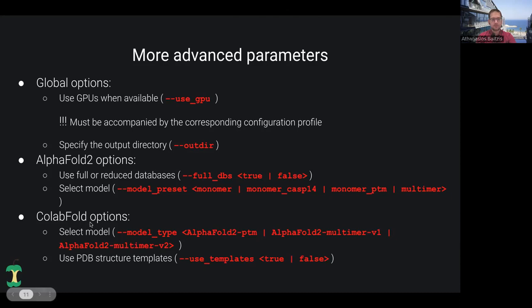Regarding the ColabFold specific options, again, you can specify the model type, the AlphaFold-ptm, which is the default for monomers, and two multimer models. The most improved version is the default version 2. You can also specify if you want to use PDB structure templates or not in the first step where you populate the pair representation matrix. You can find some more specific and detailed description on the parameters available at the moment in the corresponding web page of the nf-core proteinfold pipeline.